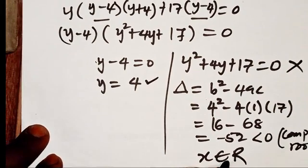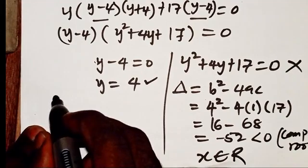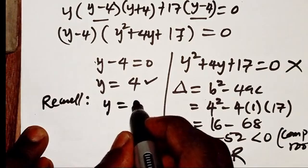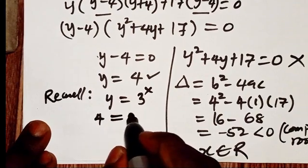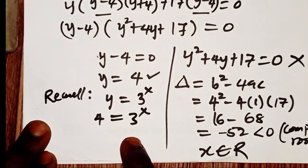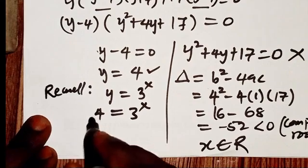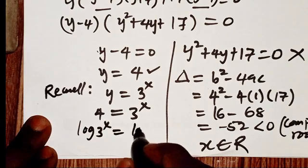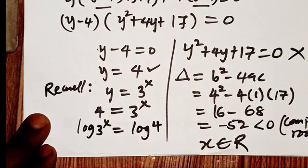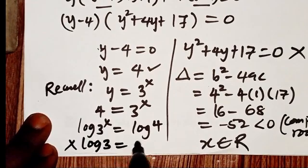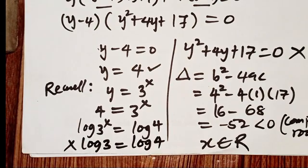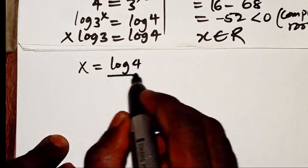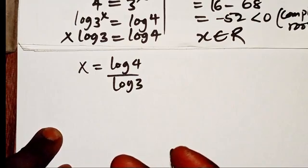Going back to Y = 4 and recalling that Y = 3^x, we have 3^x = 4. To solve for X, we take the logarithm of both sides: log(3^x) = log(4), which gives x·log(3) = log(4). Dividing both sides by log(3): x = log(4) / log(3).